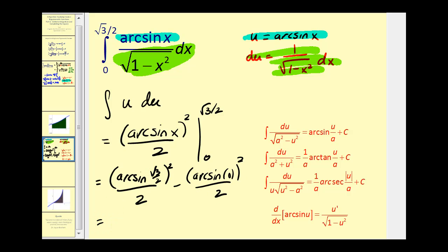Well arc sine square root 3 over 2, that's a good review. That is a 30, 60, 90 right triangle. And this would be 60 degrees or pi over 3 radians. So we have pi over 3 squared divided by 2 and the arc sine of 0 would be 0.